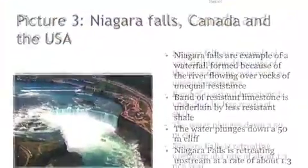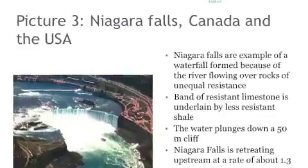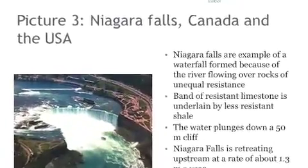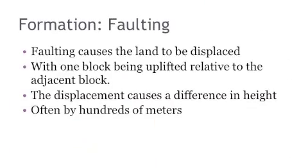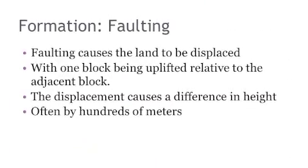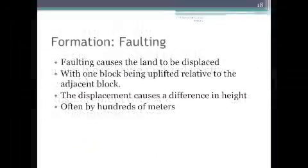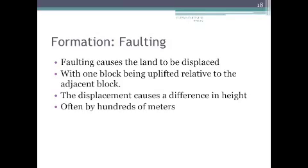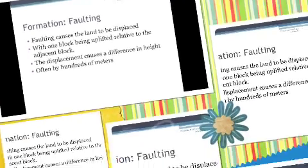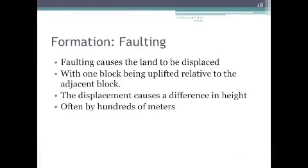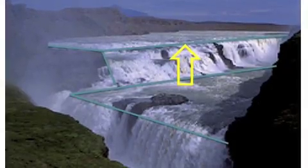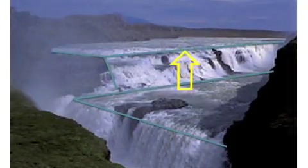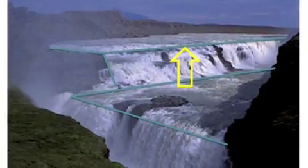This has left behind a narrow 11-kilometer gorge. Another process of waterfall formation is faulting. Faulting causes the land to be displaced, with one block being uplifted relative to the adjacent block. The displacement causes a difference in height, often by hundreds of meters. Look at the picture showing waterfall formation by faulting.